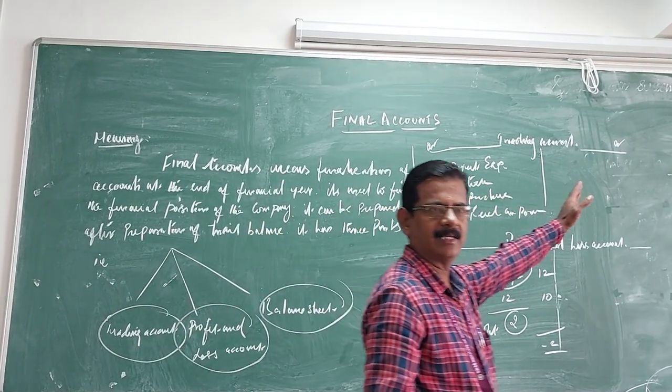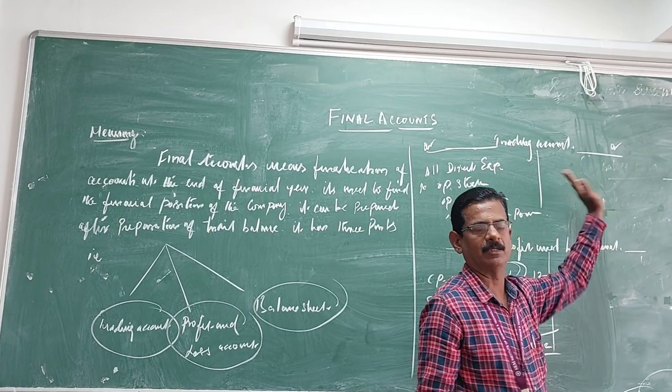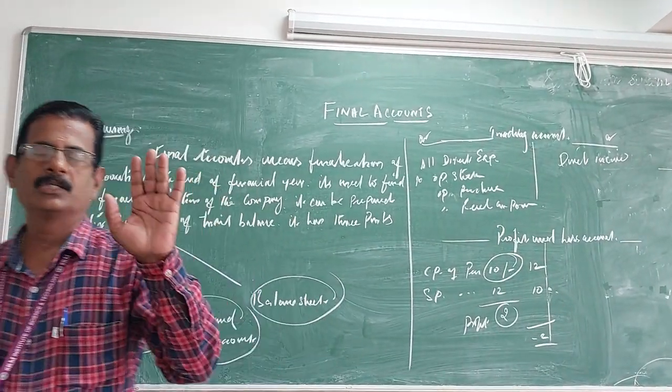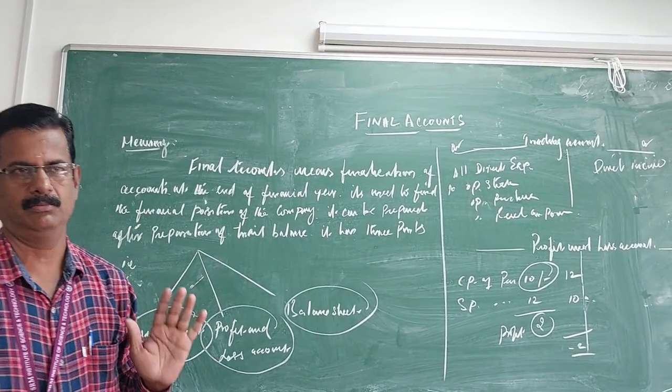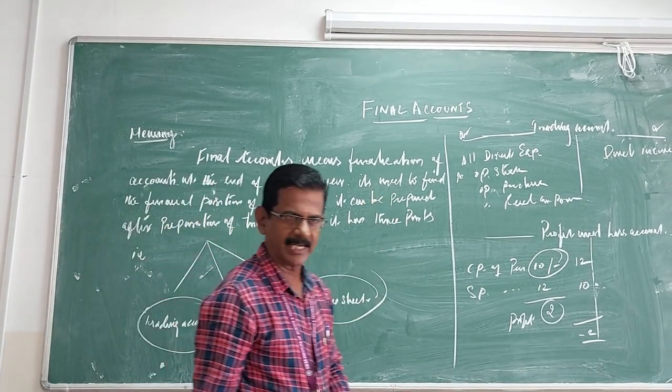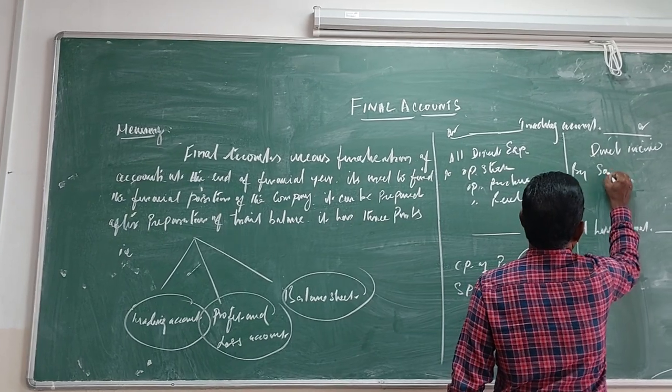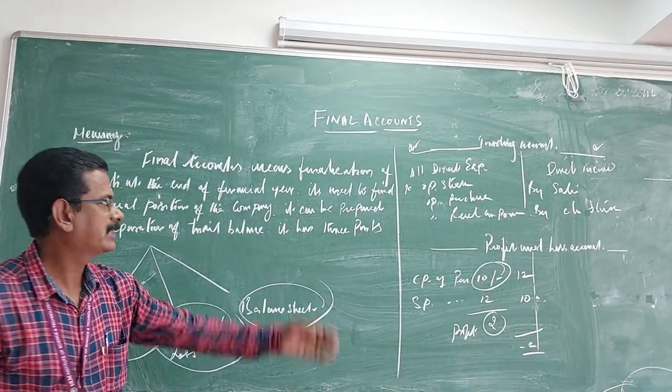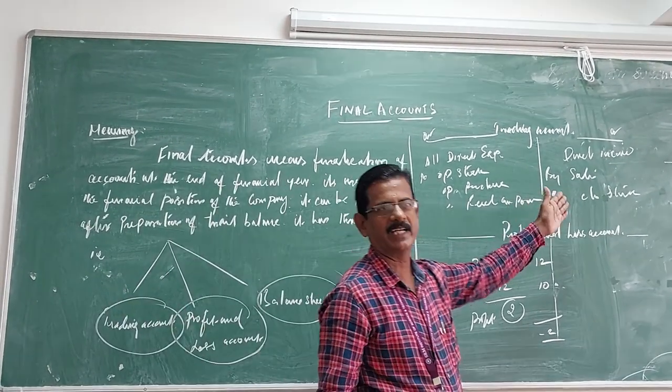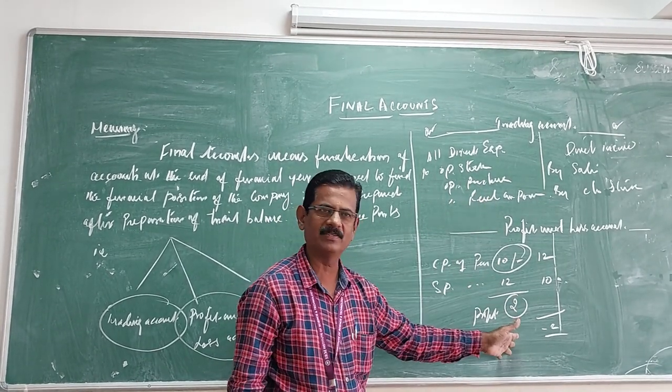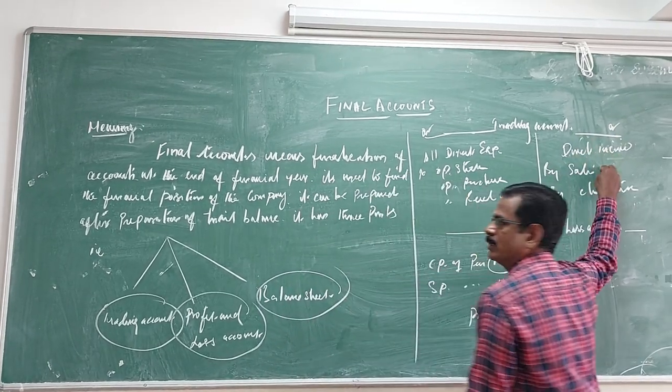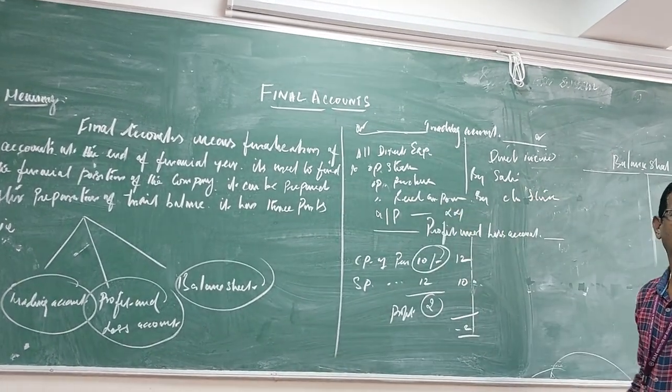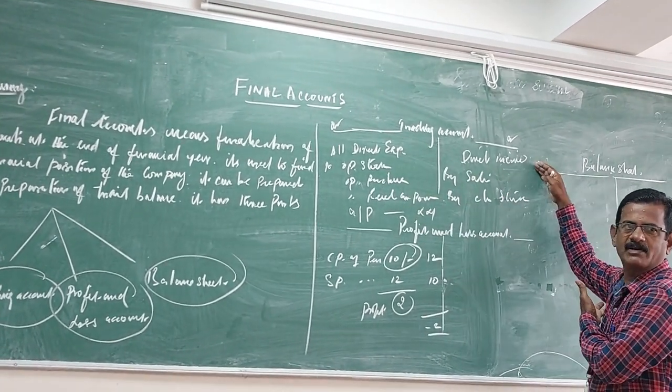The credit side should record all direct incomes. Only those income derived from sale of goods is called direct income, that is sales. The excess of credit over debit will give the gross profit. If debit is more than credit, that will give gross loss.